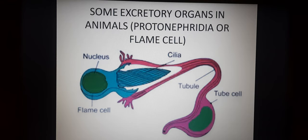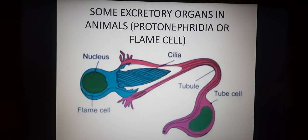First, protonephridia — another name is the flame cell. It is found in flatworms, rotifers, some annelids, and cephalochordates. Cephalochordates have a head region (cephalon) and their body is subdivided into head and thorax. Protonephridia are primarily for osmoregulation.